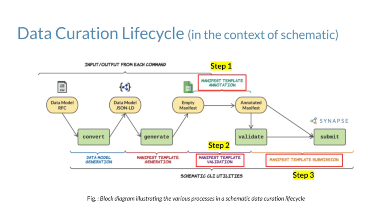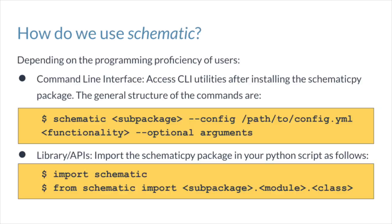Step 2 is to validate the metadata to ensure that they haven't missed any critically useful information that is necessary to correctly interpret the dataset. Finally, step 3 is to correctly associate this metadata file with the dataset containing the information described in the metadata file.